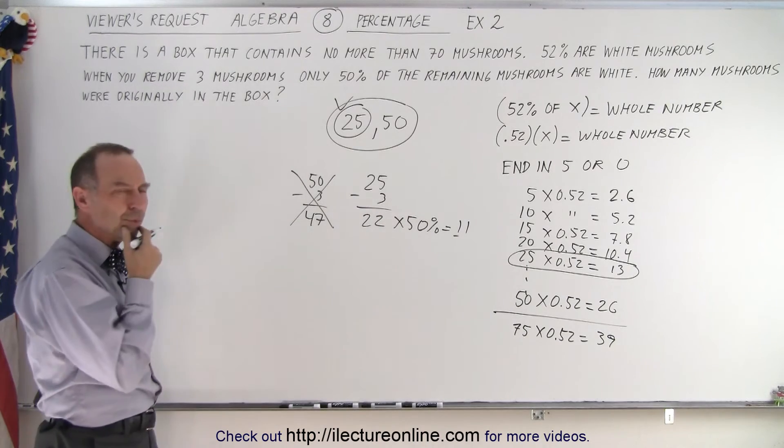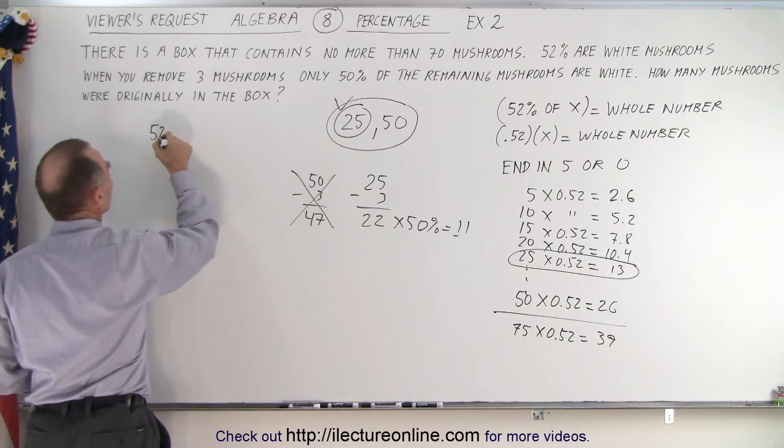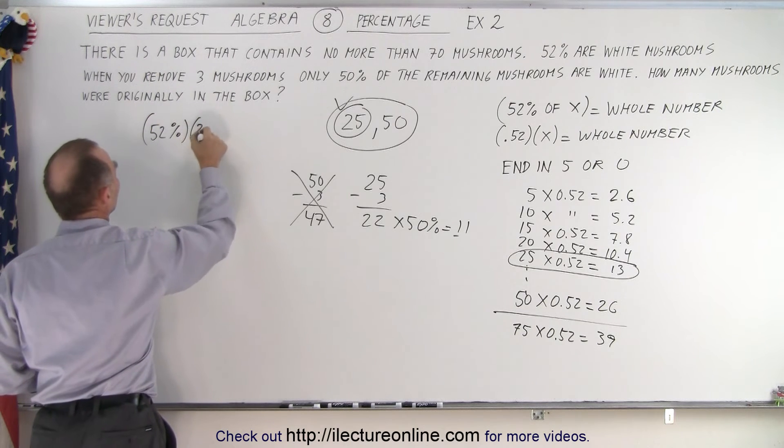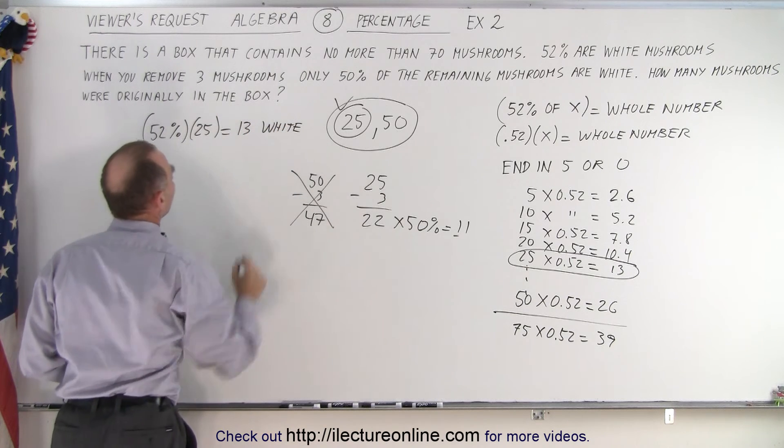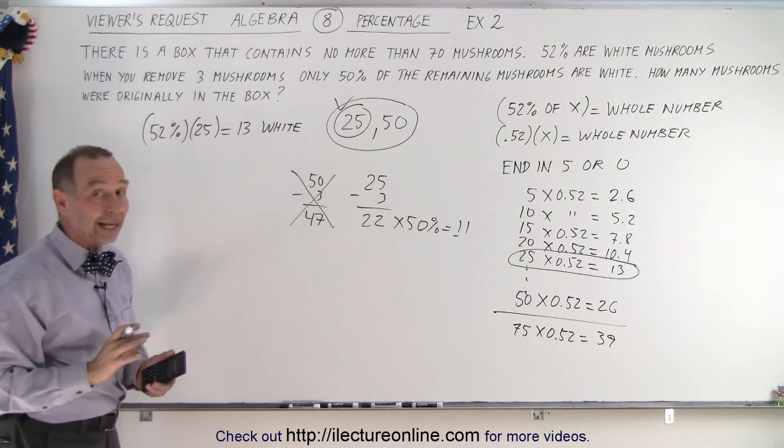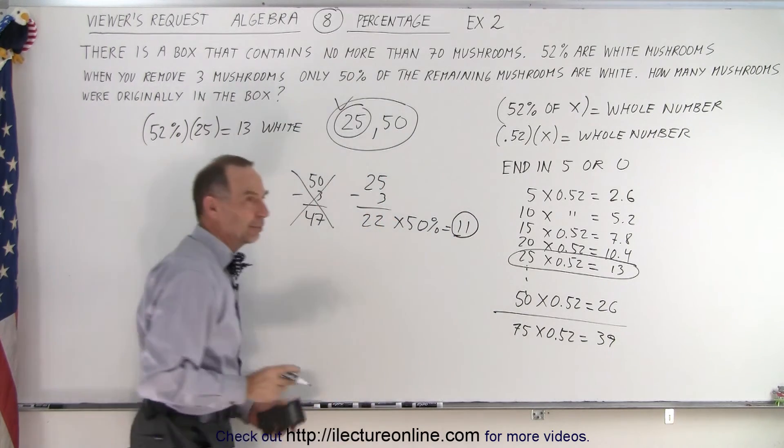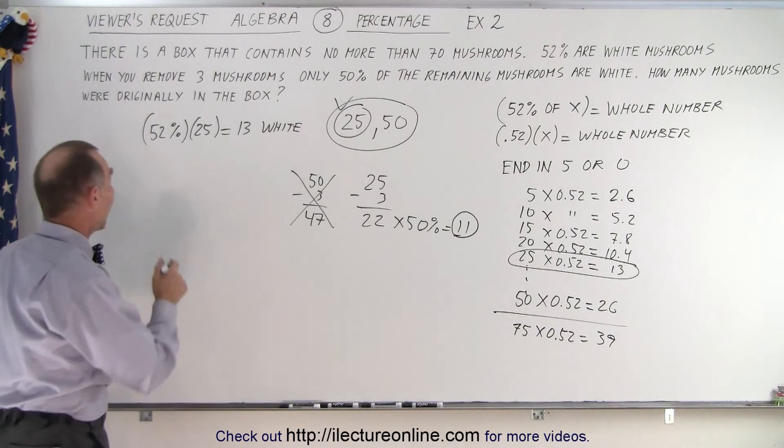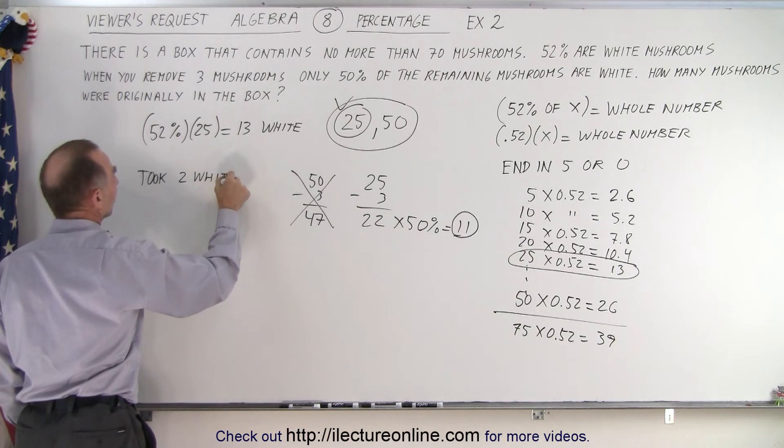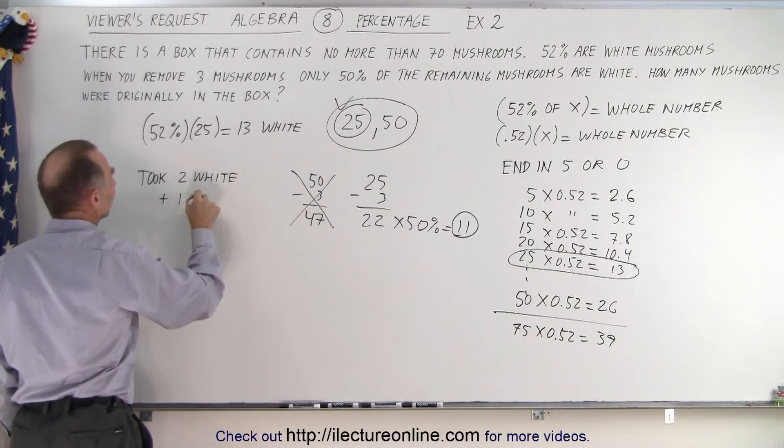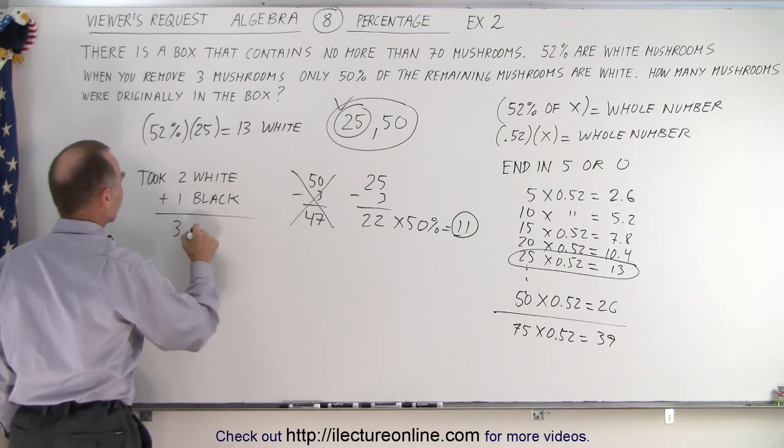But now what kind of mushrooms did we remove? Let's think about that. So 52% multiplied times 25 is equal to 13 white mushrooms. And then when I remove three mushrooms I should end up with 11 white mushrooms, which means I took two white mushrooms and plus one black mushroom. Let's say there was only white and black mushrooms in there. So that's three mushrooms removed.